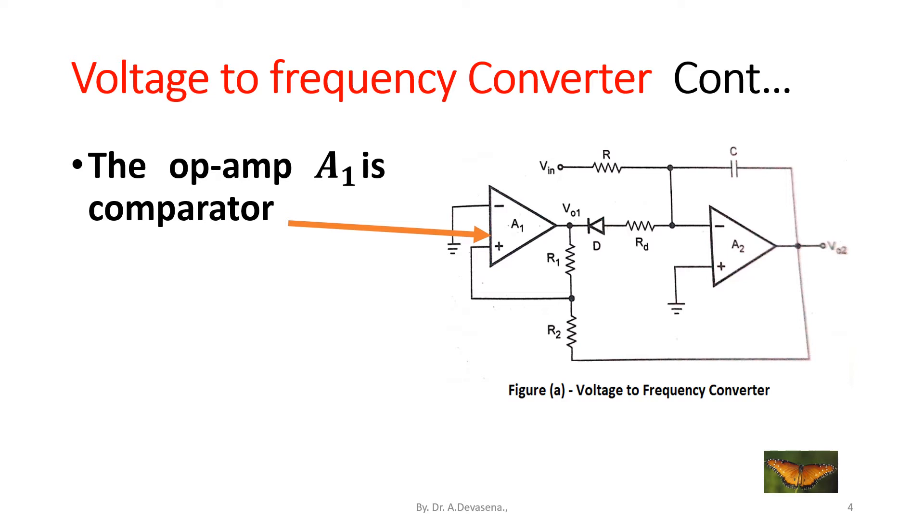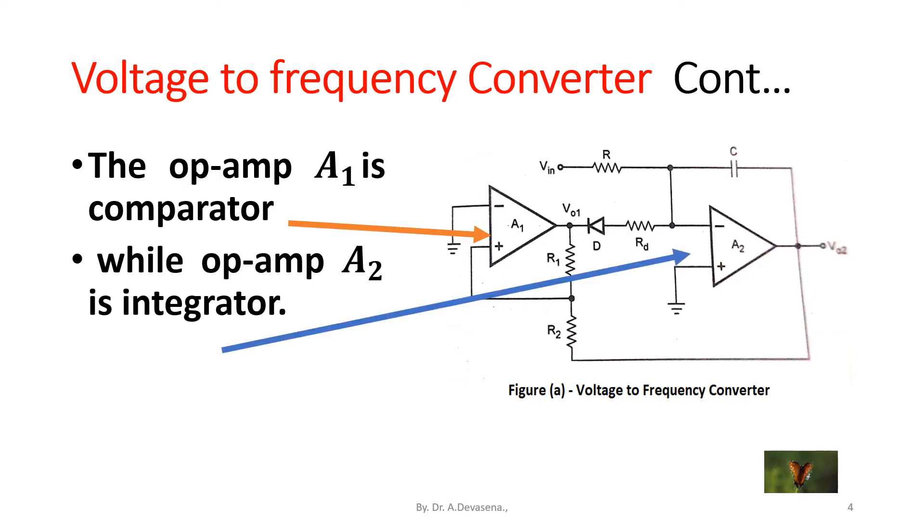This is the operational amplifier A1. It is acting as a comparator while the operational amplifier A2 is acting as an integrator. This is operational amplifier A2.